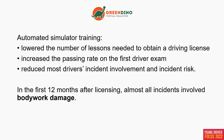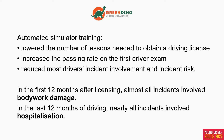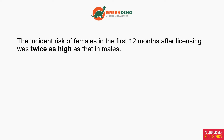In the first 12 months after licensing, almost all incidents involved bodywork damage. In the last 12 months of driving — after the first 12 months — nearly all incidents involved hospitalization. We also found that the incident risk of females in the first 12 months after licensing was twice as high as that of males. If we look at the absolute risk of females it is lower than of males, but if we correct for exposure — kilometers or miles driven — then the incident risk of females was twice as high as that of males.